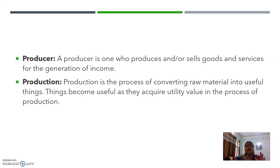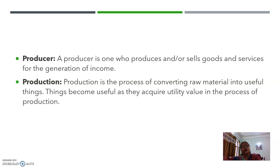Simple example: suppose किसान ने wheat produce किया farm पर। वहां से wholesaler ने purchase किया — उतनी utility value उसमें create की, उतनी value add होती गई, उसका market price भी बढ़ता गया। फिर उसने retailer को sale किया, retailer ने और utility create की क्योंकि retail shops आपके घर के आसपास होती हैं। तो किसी भी commodity में utility value create करना — that is production.